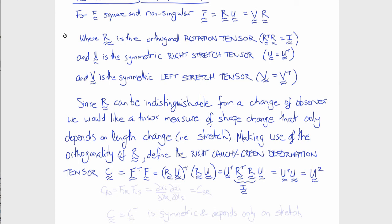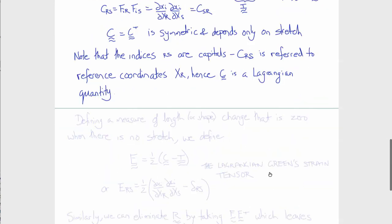In component notation, the components of C would be given by F_ir F_is, which would leave C_rs, or del xi del Xr del xi del Xs. And notice that if we switch the orders of r and s, we get the same expression. So C is symmetric, which we would expect because U is symmetric. And furthermore, notice that the indices of C are the capital letters, referring to the components of the reference or undeformed coordinates. So C, the right Cauchy-Green deformation tensor, is a Lagrangian quantity.